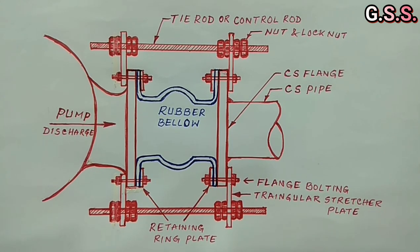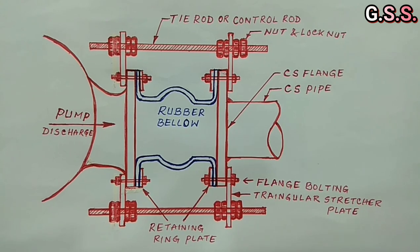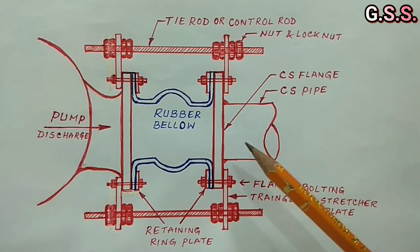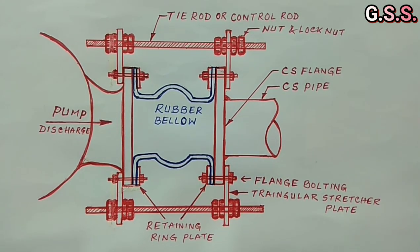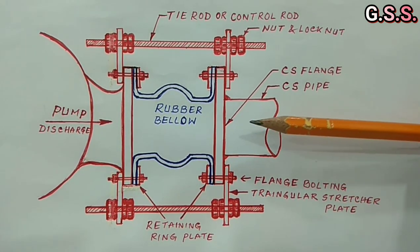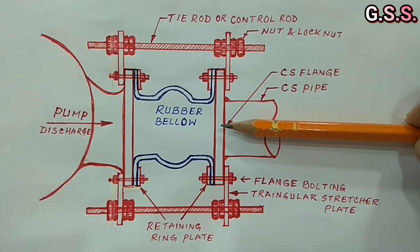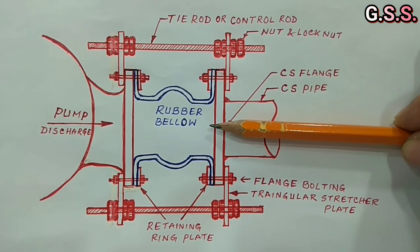Now we will see how the bellow makes the nozzle load free. We can mount steel pipe and flange directly with the pump nozzle. But steel piping alignment cannot be 100% perfect and definitely there will be some minor misalignment in steel piping in axial direction, lateral direction and in angular direction.